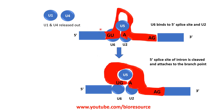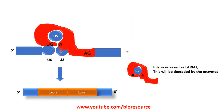The next step is that U1 and U4 are released, and U6 binds to the 5-prime splice site, forming a complex with U2, while the loop structure is maintained. Further to this, the 5-prime splice site of the intron is cleaved and attaches to the branch point. In the next step, the intron is released as a lariat structure. The intron is cleaved, released as a lariat, and the exons are joined together to form the mature mRNA. This completes the splicing of the pre-mRNA.